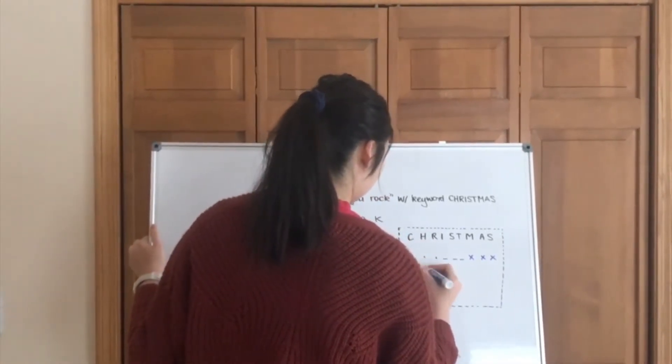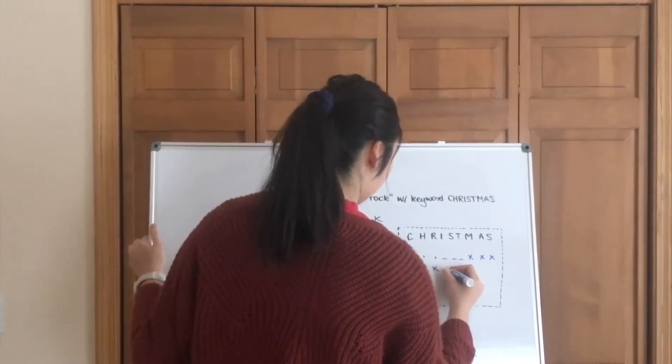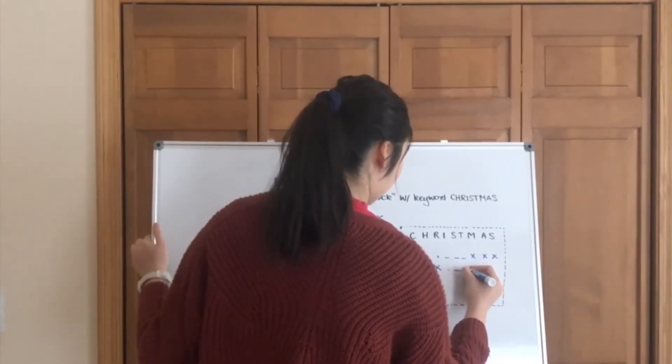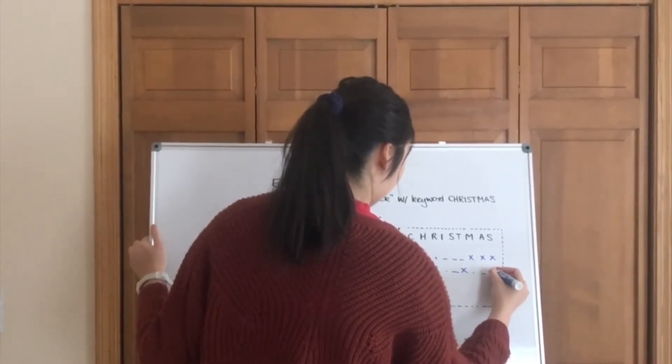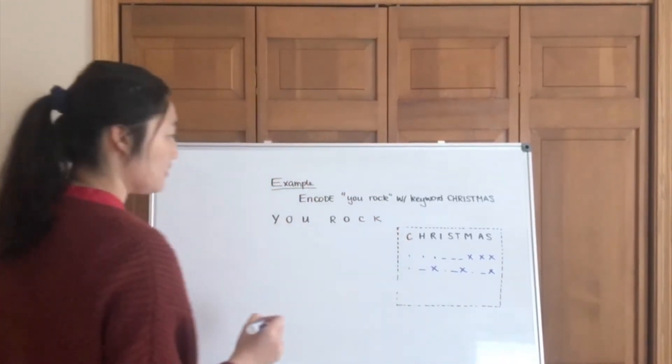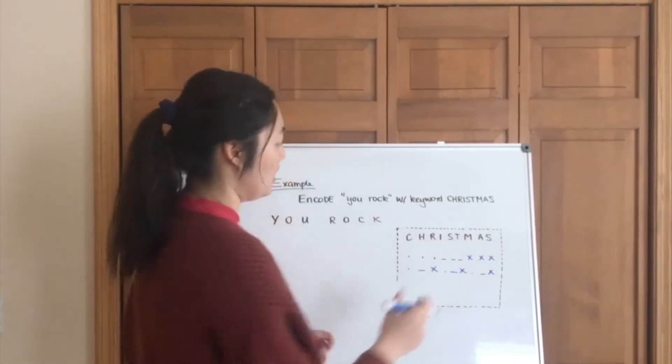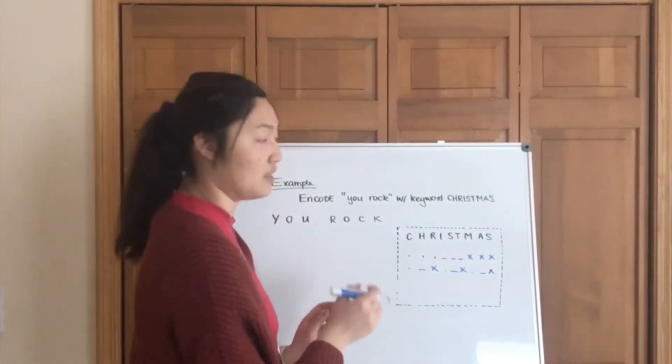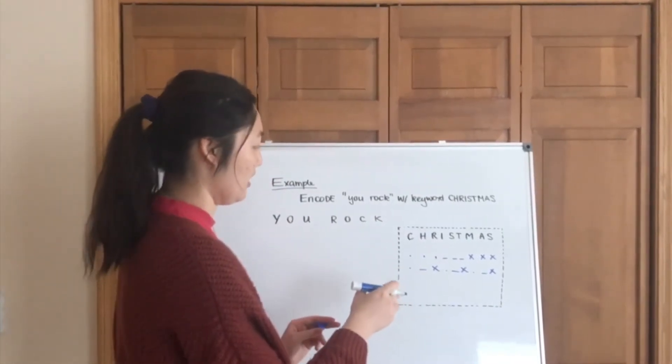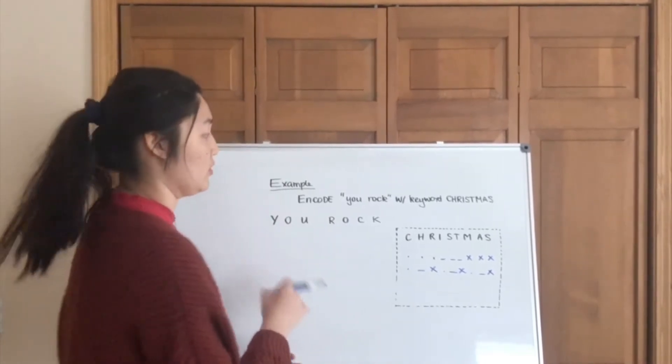And then you go dot, dash, X, dot, dash, X, dot, dash, X. Okay, so once we change CHRISTMAS into numbers, this is going to be what each individual number is going to map onto. It'll be useful later.